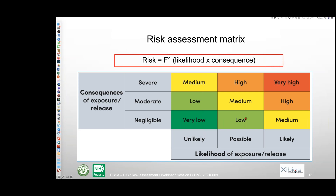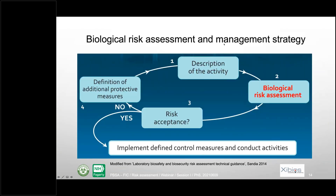This is a risk management strategy based on risk assessment. We need first to describe the activity, then do the risk assessment, and ask ourselves: is the risk acceptable? If we can accept the risk, then we can proceed with work and implement the control measures as defined. If not, we need to add more protective measures and again look at the activity, do the risk assessment, and ask: is it now sufficient? There is a possibility to continuously adapt and improve in a system like this.